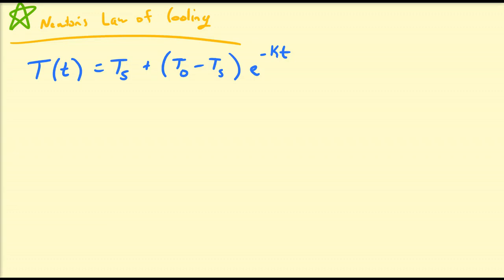Hello there. In this video we're going to be discussing another application of exponential equations and functions known as Newton's Law of Cooling, which is given by this representation here: T of t is equal to T sub s plus the quantity T sub 0 minus T sub s times e to the power minus kt. We'll be discussing what each of these letters and variables represent, and also go through a couple examples on how to use it.